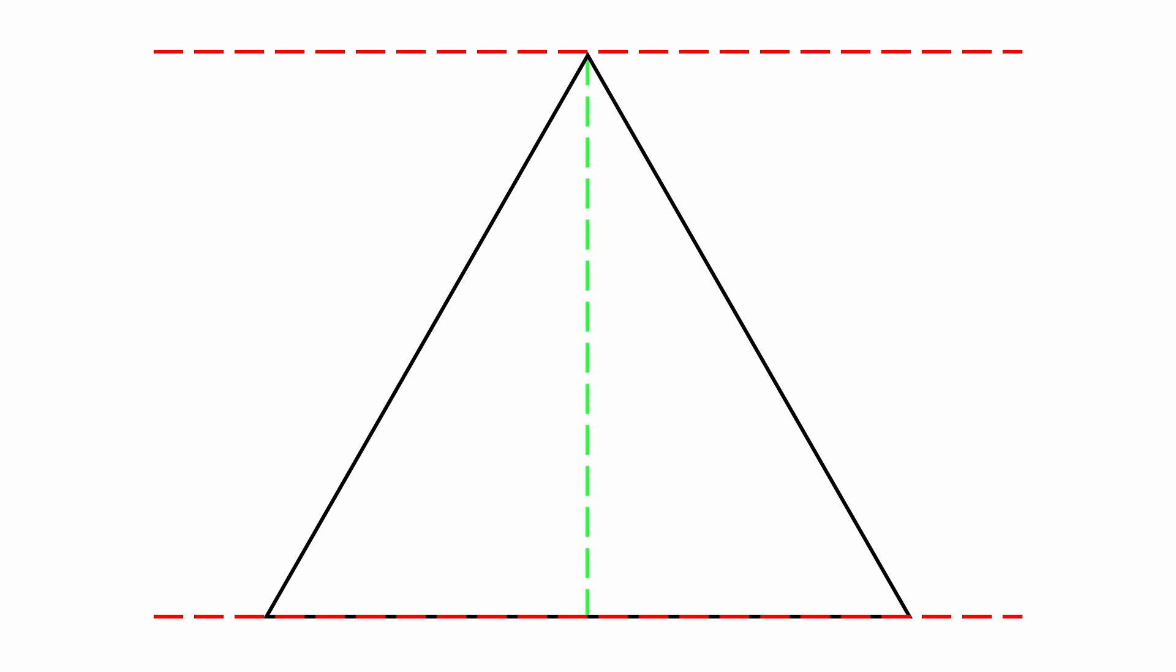By definition, if we draw another perpendicular line that spans the distance between these two horizontal lines, we get the triangle's height.